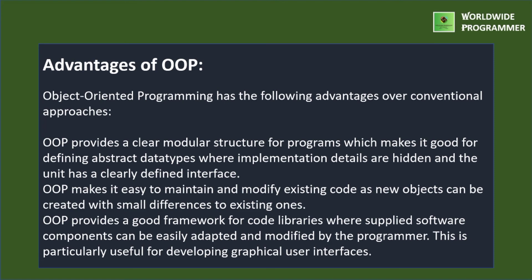Object-oriented programming requires thinking about the structure of the program and planning at the beginning of coding — looking at how to break up the requirements into simple reusable classes that can be used to blueprint instances of objects. Overall, implementing object-oriented programming allows for better data structures and reusability, saving time in the long run.